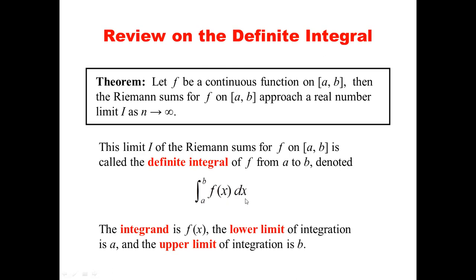Both trapezoidal rule and Simpson's rule approximate the definite integral where the function is said to be non-elementary, meaning it's not easy to integrate. The techniques discussed in midterm on how to evaluate integrals are all elementary integrals. It is said to be non-elementary when those techniques are no longer appropriate or useful. The definite integral represents the limit i, the Riemann sum for our function on the interval a to b. The integrand is your function of x, the lower limit is a, and the upper limit is b.